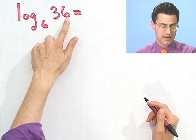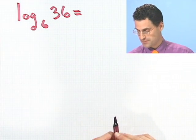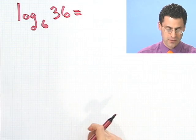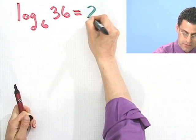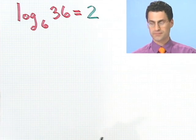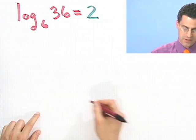So what is that? Well, 6 to what power equals 36? The answer is 2, so that equals 2. Okay, let's try another one together. How about this one?